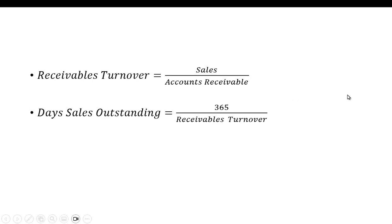We also might want to look at how quickly you get paid. Here we have receivables turnover — how quickly you're turning over these payments — and then days sales outstanding, which is 365 divided by receivables turnover. You want to get a gauge as to how quickly you're selling stuff and how quickly you're getting paid.